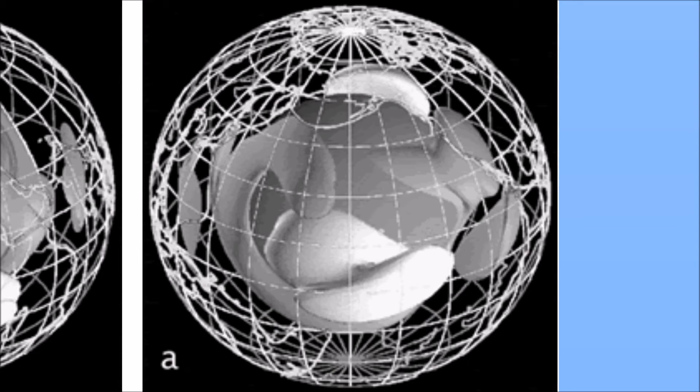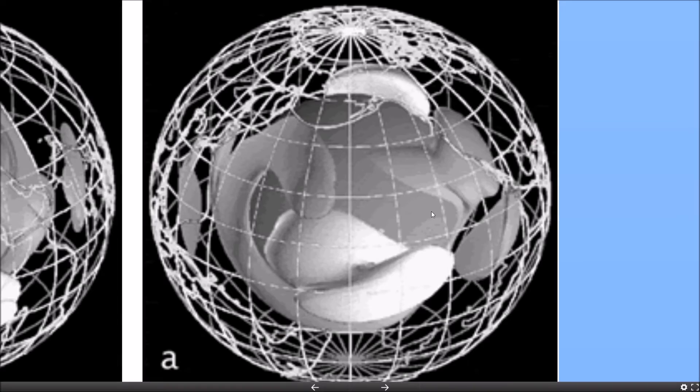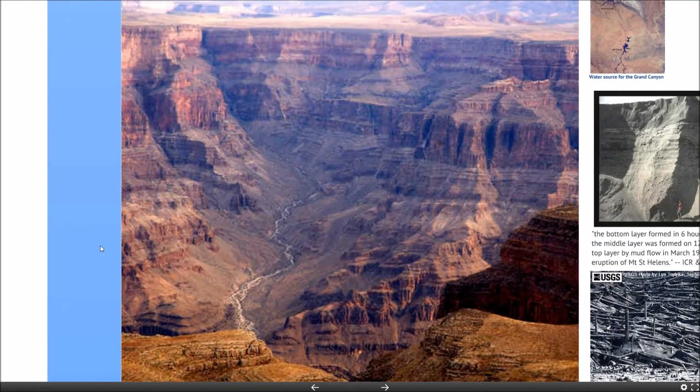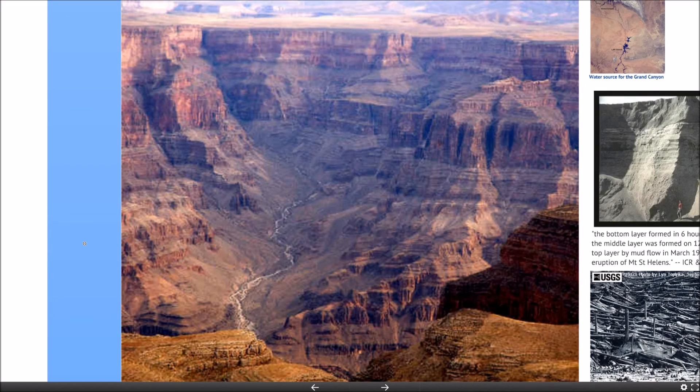So, the question that comes up a lot is, where do the layers come from, right? So, every time you go cut through a road cut in the road or things like the Grand Canyon, you can see these layers. So, what's going on there? Well, these crazy creation scientists have been claiming that these layers can happen very suddenly.